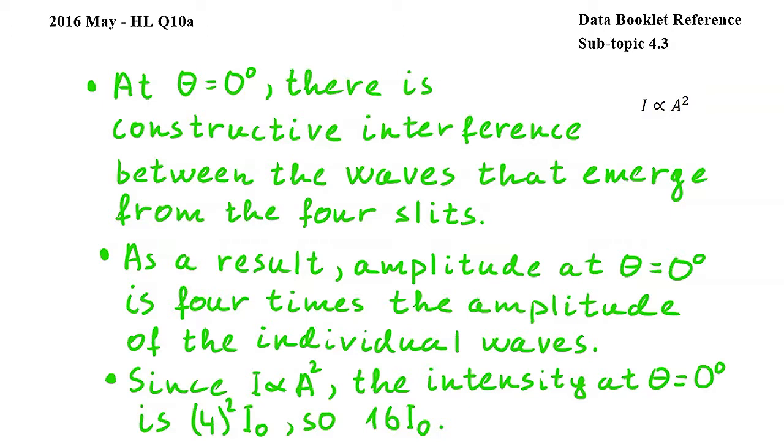First, at theta equals zero degrees there is constructive interference between the waves that emerge from the four slits.